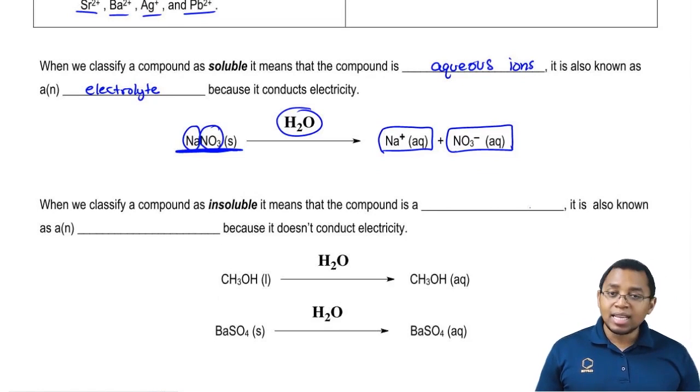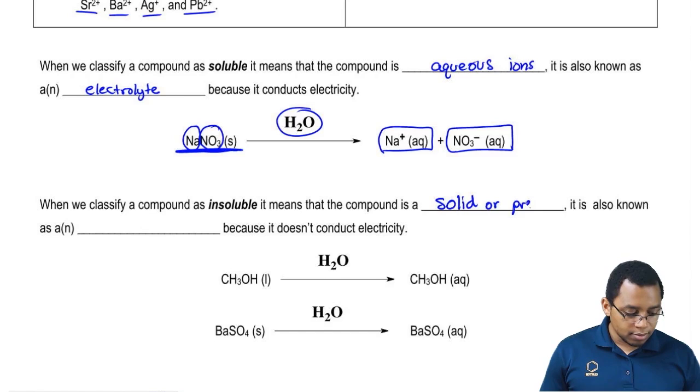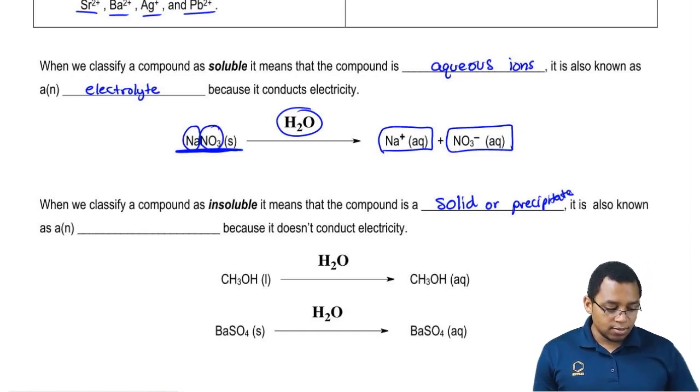When we classify a compound as insoluble, it means that that compound usually is a solid or precipitate. We call these guys non-electrolytes.